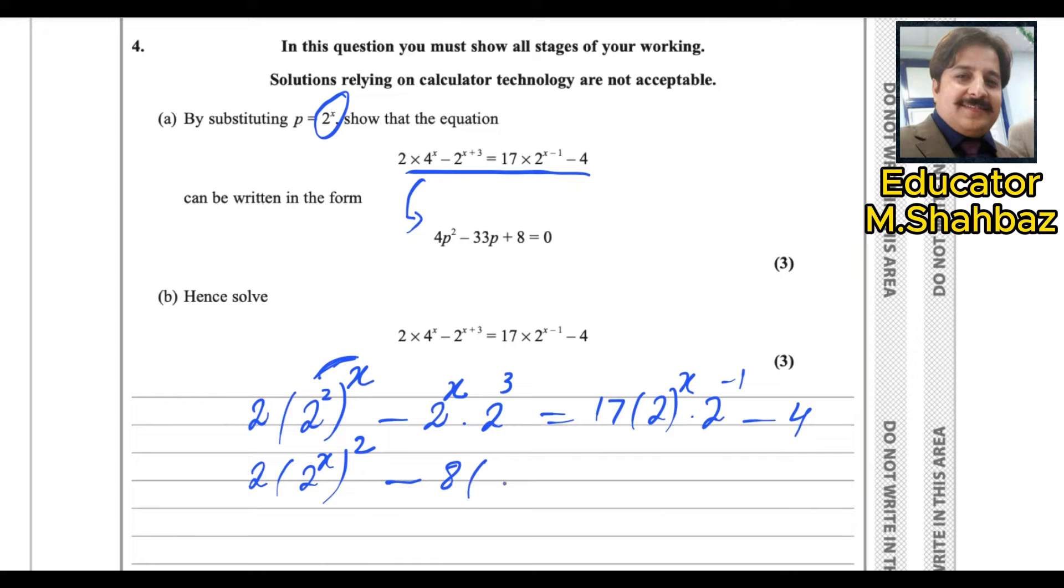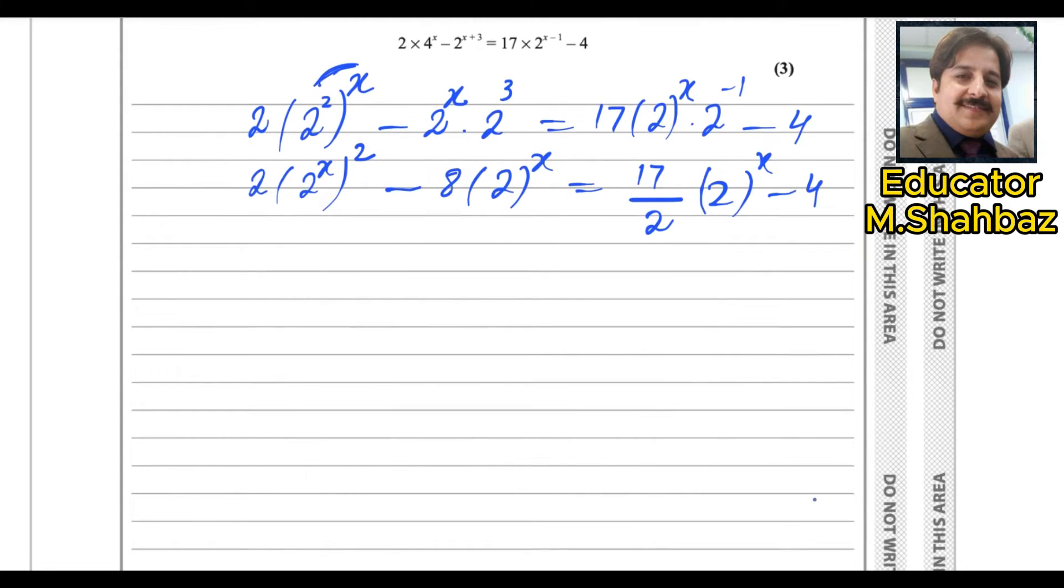And this is 8, 2 power x. This is 17, bring this 2 power minus 1 down, in the denominator it becomes positive, 2 power x minus 4. Now you can replace, you can substitute the values. Now you substitute 2 power x with p, so this one becomes p, it will be 2p square minus 8p equals 17 over 2p minus 4.